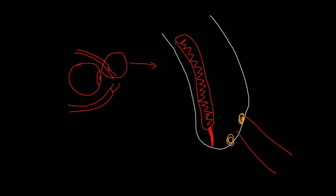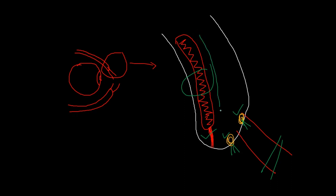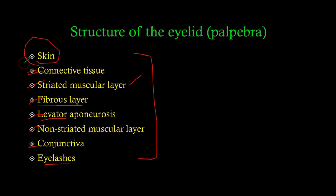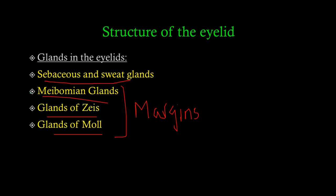The glands of Zeiss are sebaceous glands — they secrete oily secretions which help in moisturizing the eye and keeping the tear film intact. The glands of Moll are sweat glands — they release watery secretions. So to summarize at the eyelid margin: glands of Zeiss, glands of Moll, and Meibomian (tarsal) glands — plus the eyelashes and the orbicularis oculi striated muscle layer, the connective tissue, the fibrous tarsal plate layer.